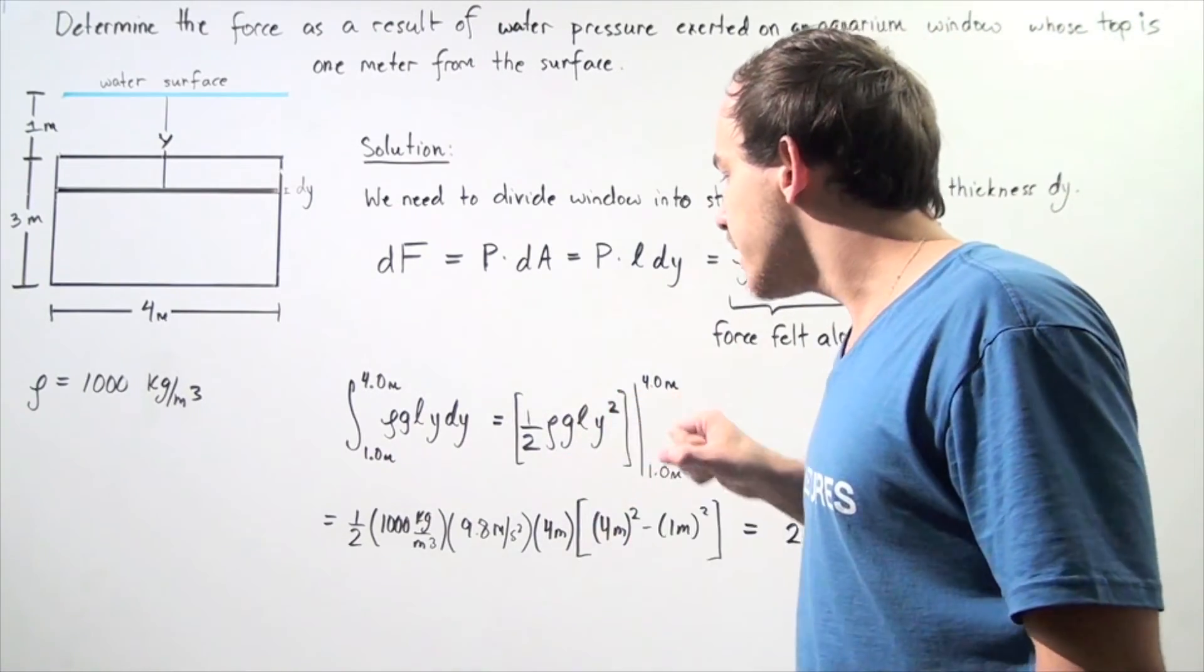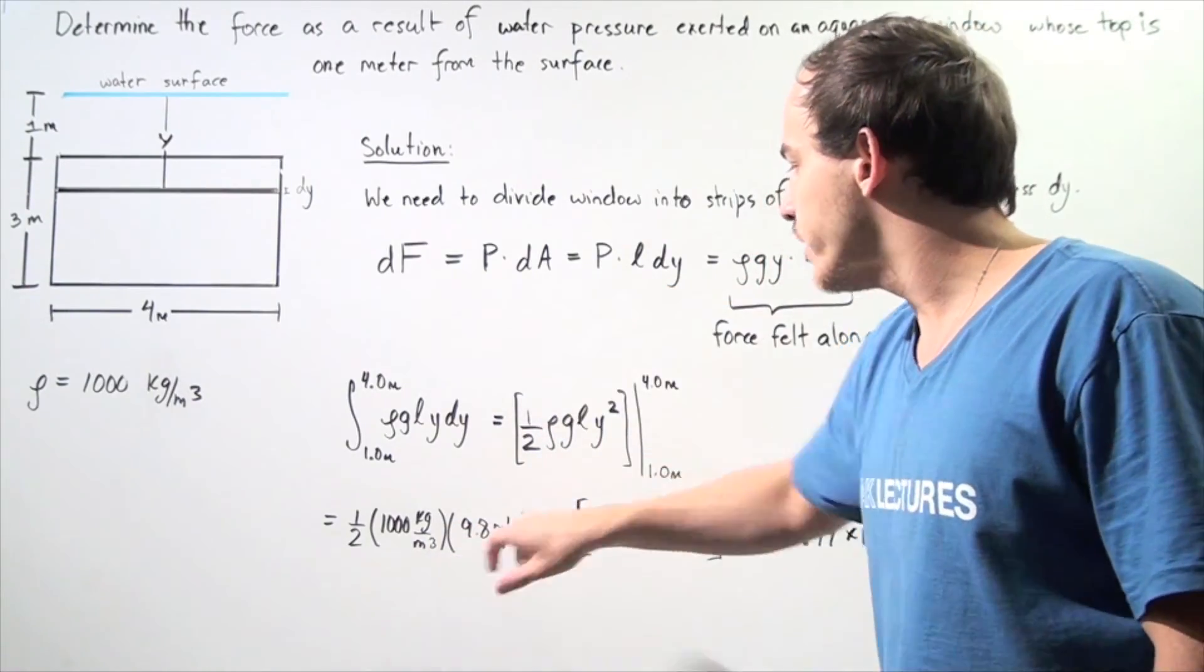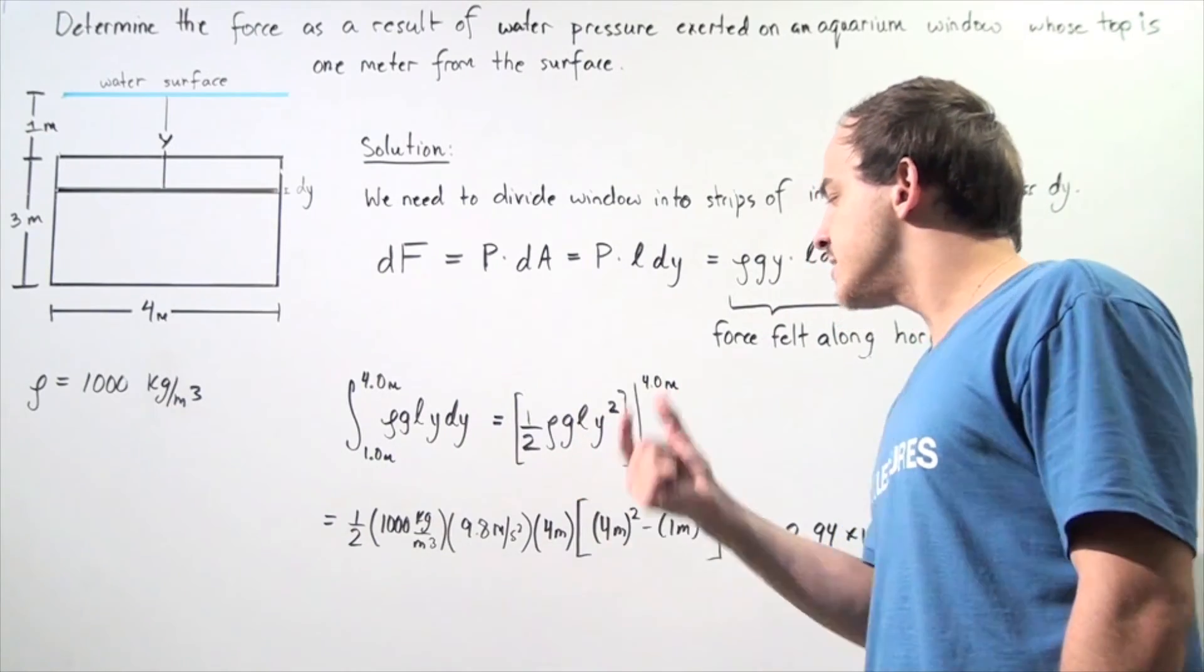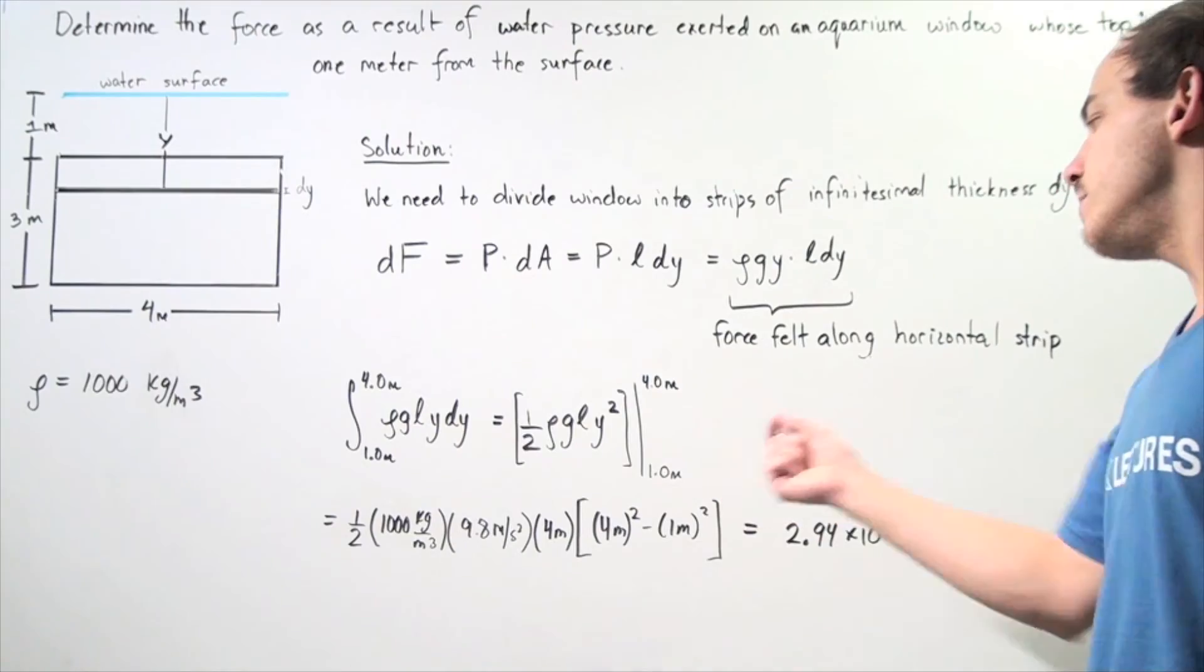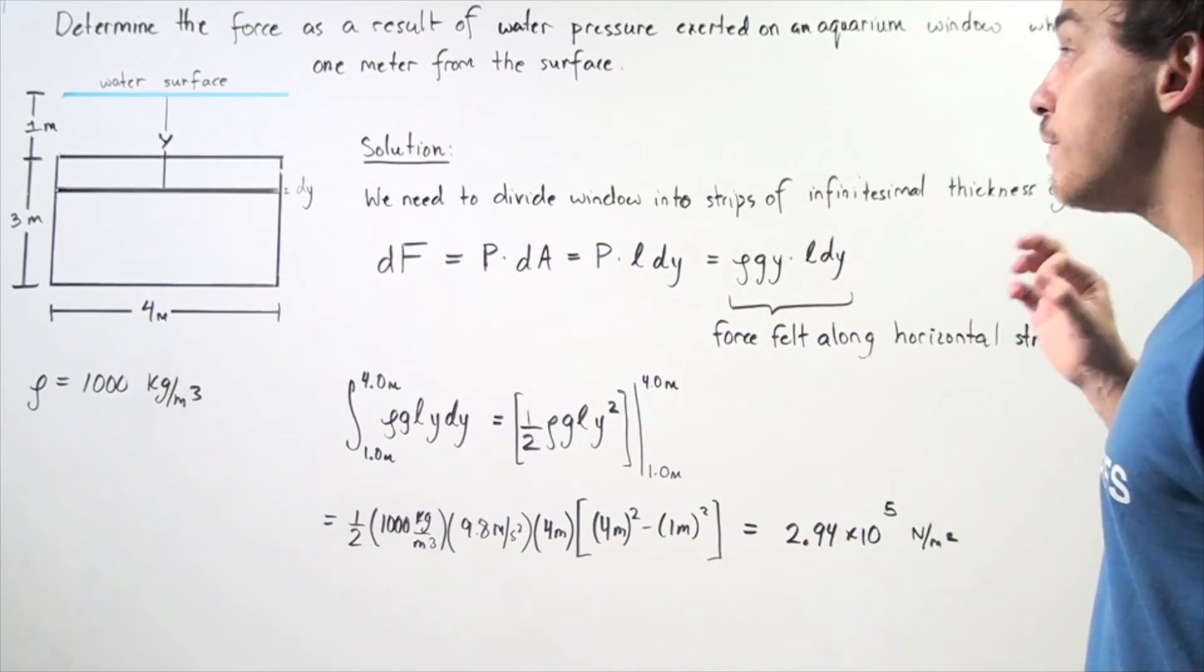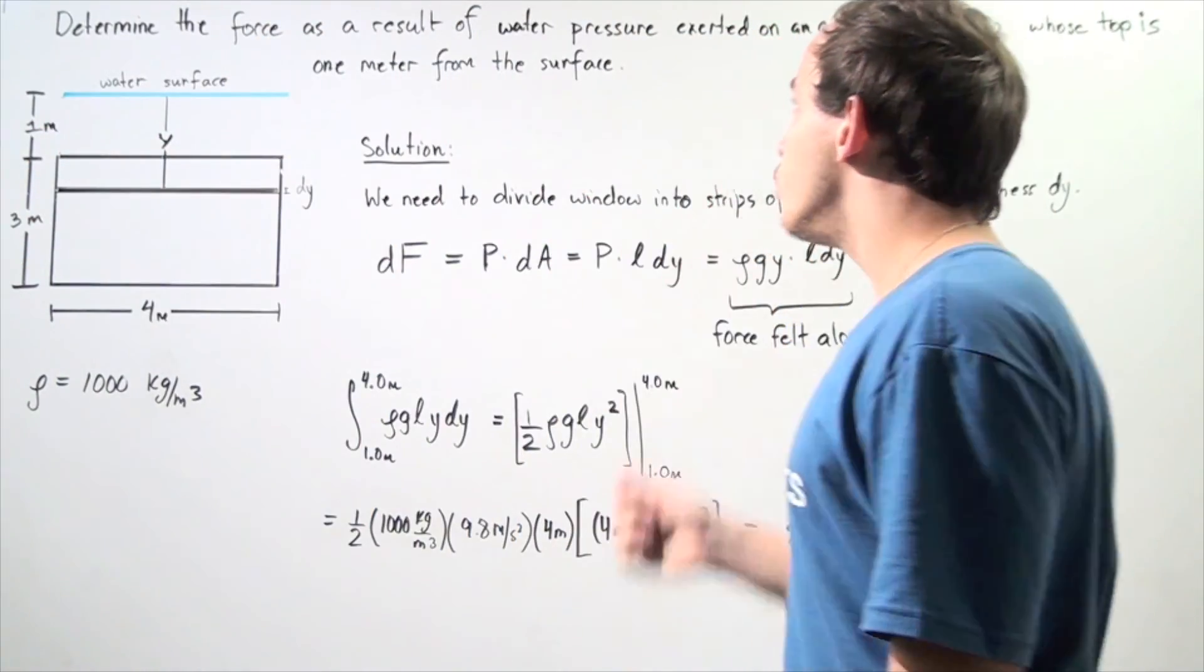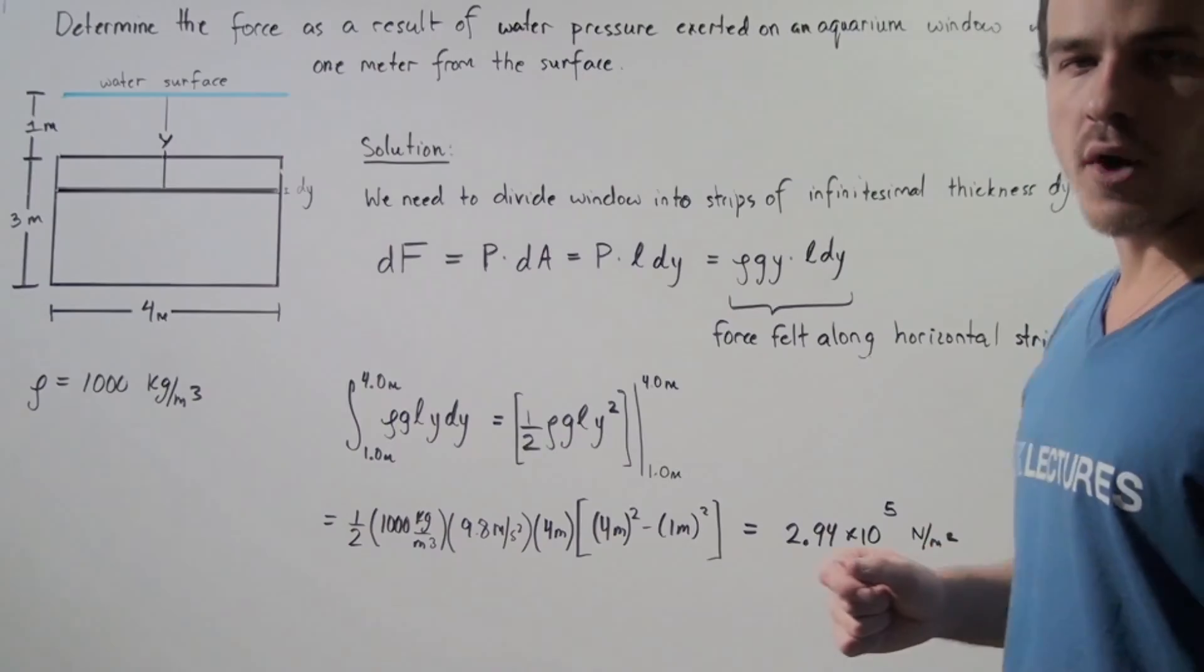So we actually plug in our value for the density of 1000. Our g is 9.8. Our L is 4 meters and these two quantities differ. So one is 4 meters squared and the other one is 1 meter squared. So we calculate this and we get that the force, the perpendicular force that this entire window feels due to the pressure of the water, is 2.94 times 10 to the 5 newtons per meter squared.